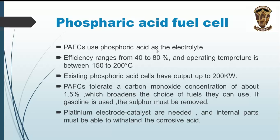In the phosphoric acid fuel cell, phosphoric acid is used as the electrolyte. Efficiency ranges from 40 to 80 percent and operating temperature is between 150 to 200 degrees Celsius. Existing phosphoric acid cells have output up to 200 kilowatts. They tolerate a carbon monoxide concentration of about 1.5 percent, broadening fuel choices. If gasoline is used, sulfur must be removed, platinum electrode catalysts are needed, and internal parts must withstand the corrosive acid.